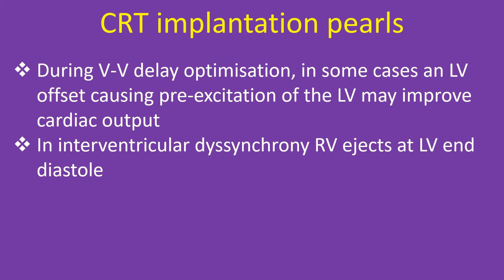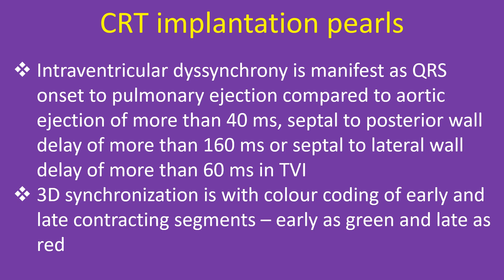During VV delay optimization, in some cases an LV offset causing pre-excitation of the LV may improve cardiac output. In intraventricular dyssynchrony, RV ejects at LV end-diastole. Intraventricular dyssynchrony is manifest as QRS onset to pulmonary ejection compared to aortic ejection of more than 40 ms, septal to posterior wall delay of more than 160 ms, or septal to lateral wall delay of more than 60 ms on TVI. 3D synchronization uses color coding of early and late contracting segments, with early shown as green and late as red.